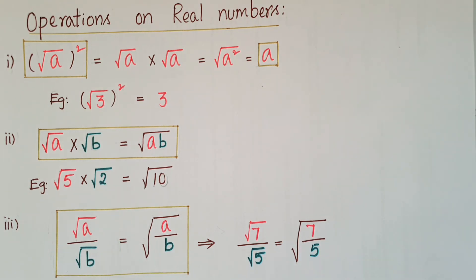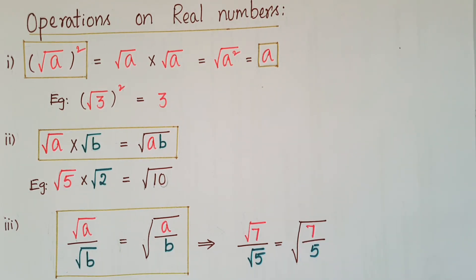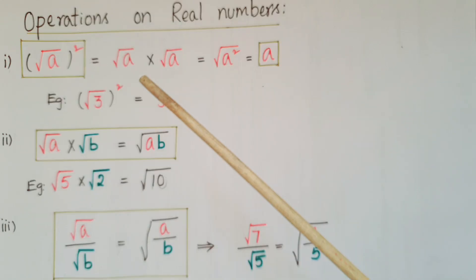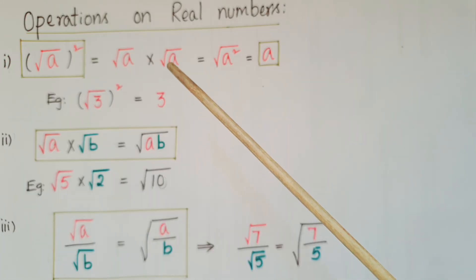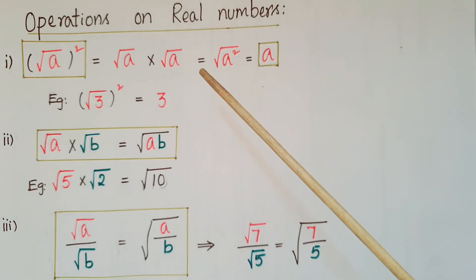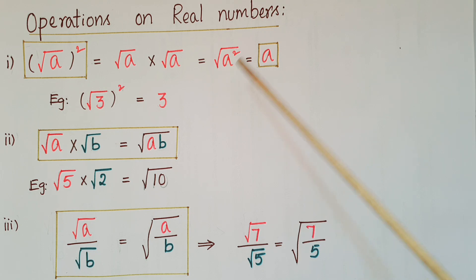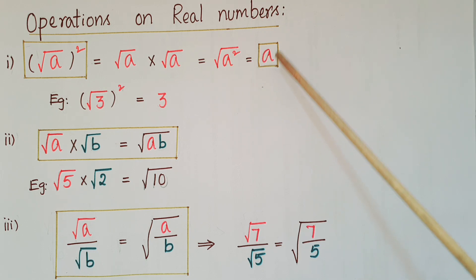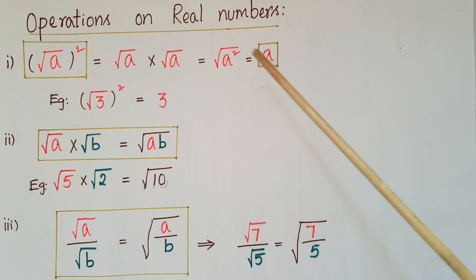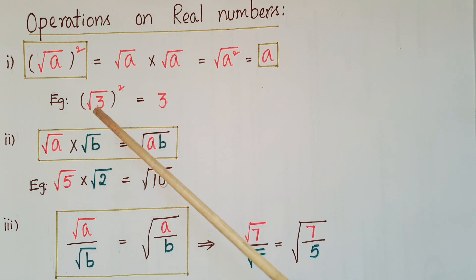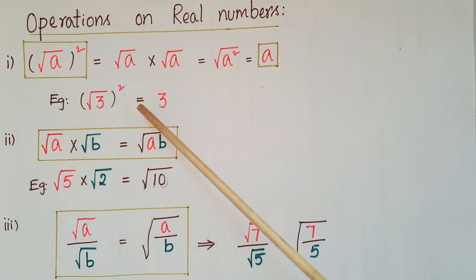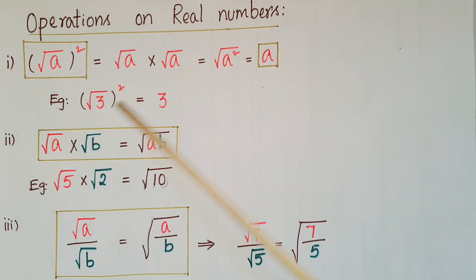Hello everyone, today I am going to tell operations on real numbers. The first one is: root a whole square is equal to root a into root a, that is root a squared, that is a. So root a whole square, we can directly write as a. For example, root 3 whole square is equal to 3.